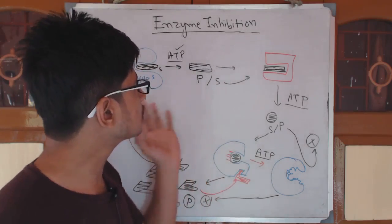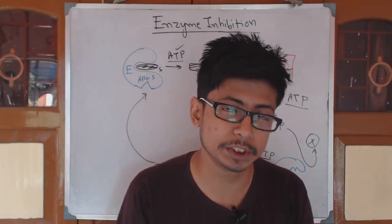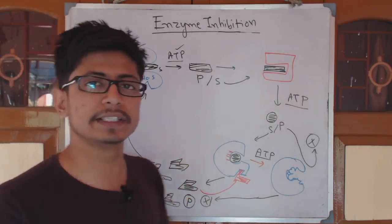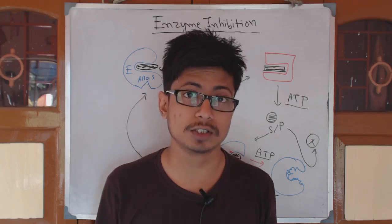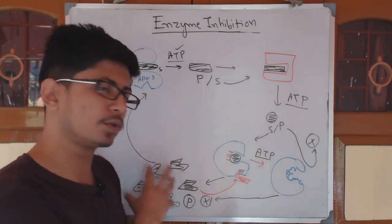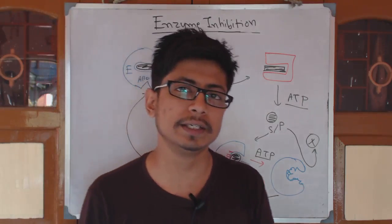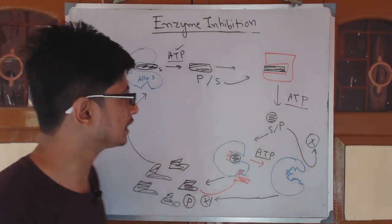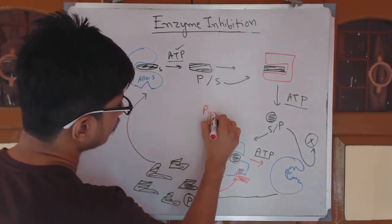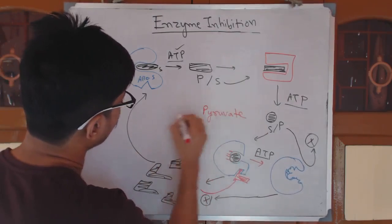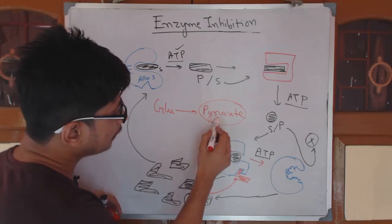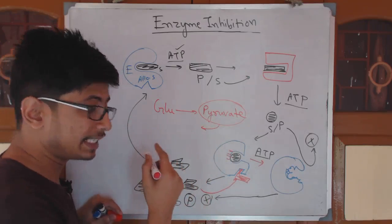A real-life example is the production of bile salts or bile acids, which is controlled by feedback inhibition. Another example is the production of pyruvate from glucose — if pyruvate is already present, it will inhibit the earlier enzyme that converts phosphoenolpyruvate (PEP) to pyruvate.